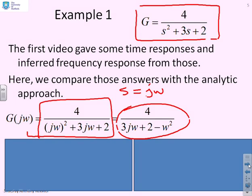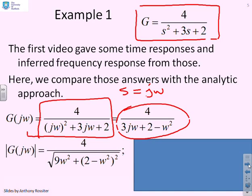Next we find the gain and phase. The gain, the modulus of G(jω), uses Pythagoras. We square the imaginary part, 3ω, giving 9ω², and square the real part, (2 - ω²)², then take the square root. A fairly simple answer.